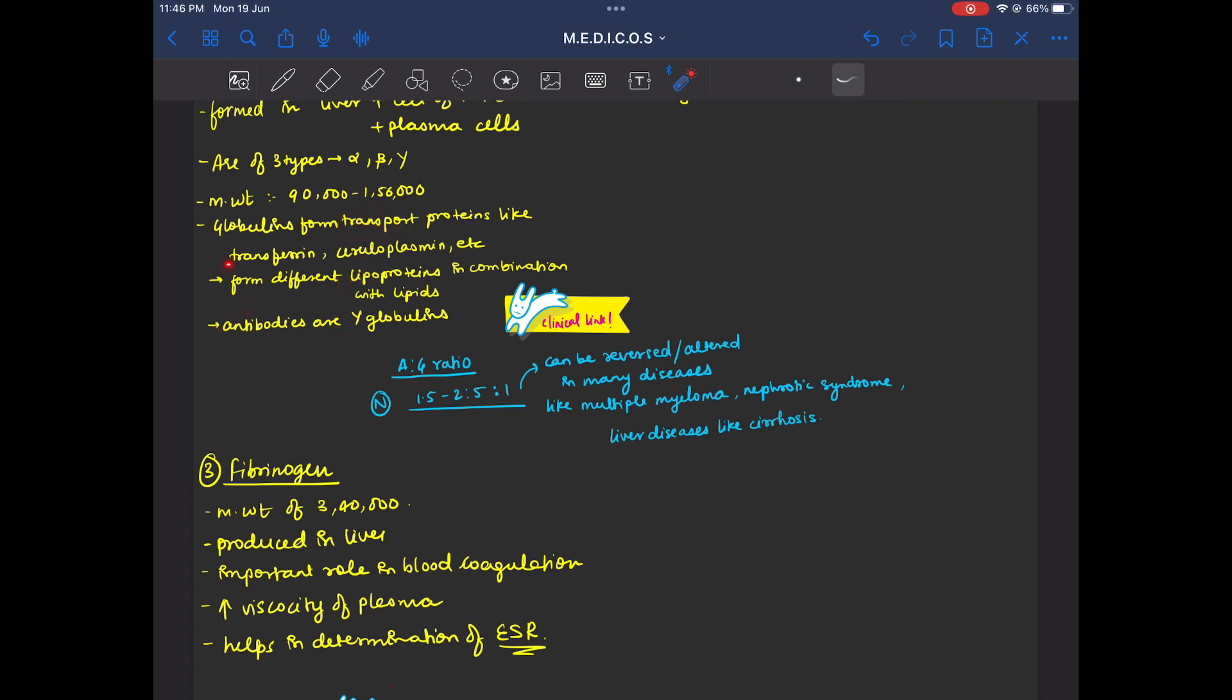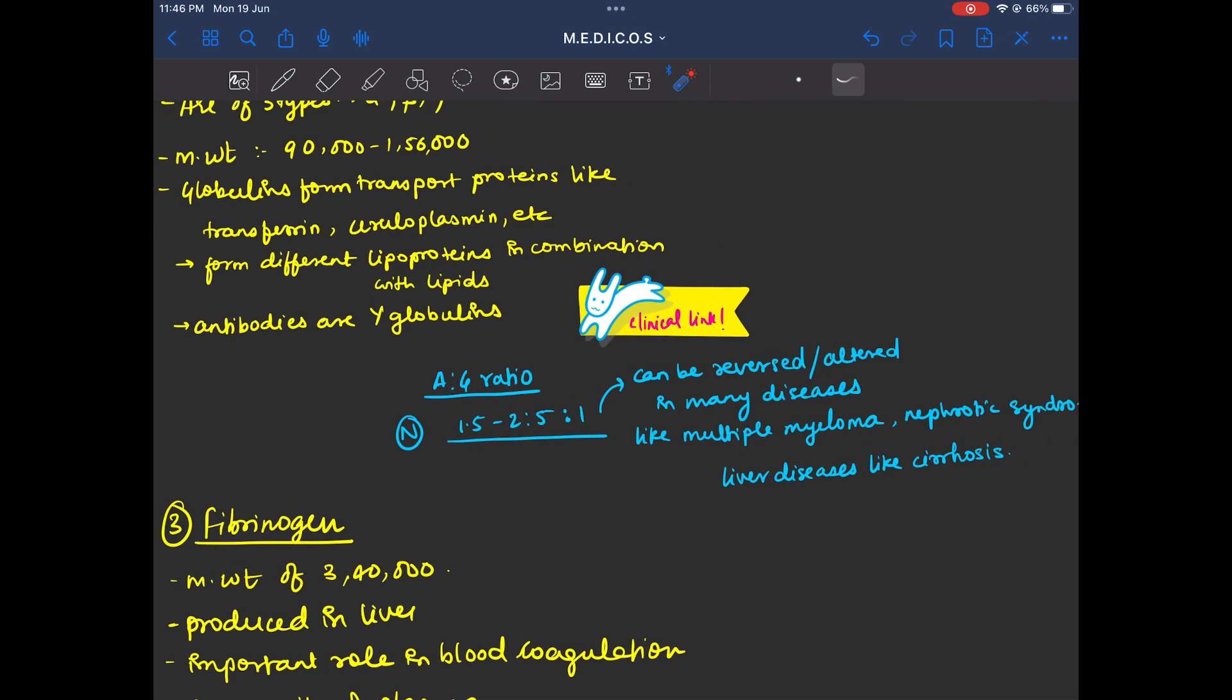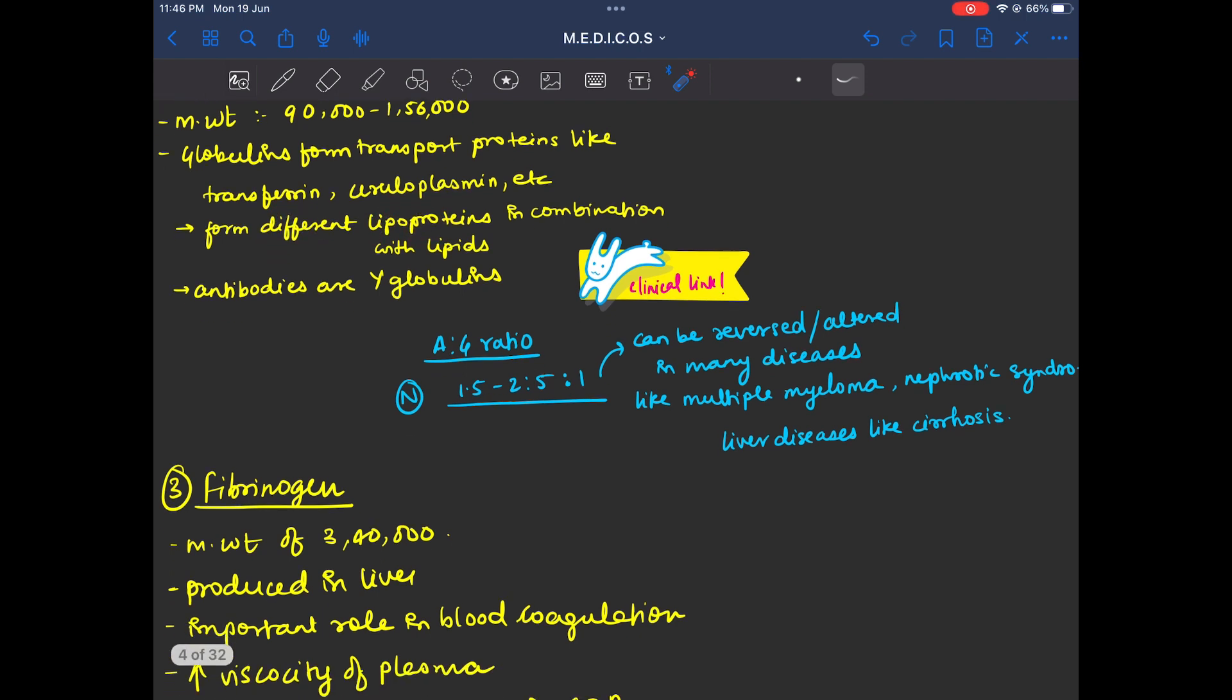Transport proteins like transferrin and ceruloplasmin. Transferrin transports iron and ceruloplasmin transports copper. All these are globulins. The work of globulins is to make lipoproteins in combination with lipids. Another third work is to form antibodies.